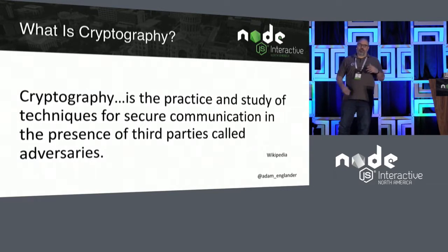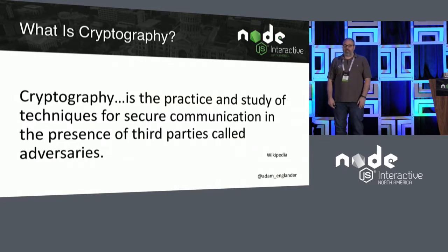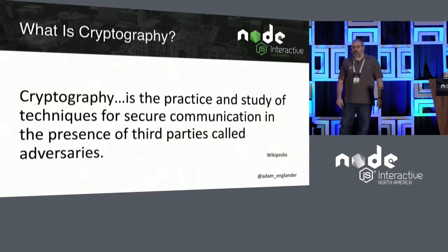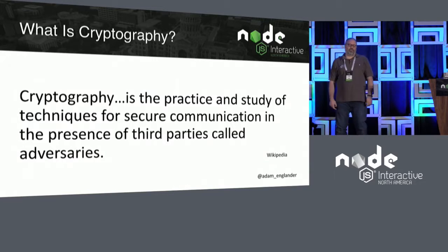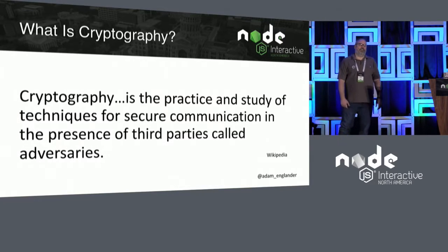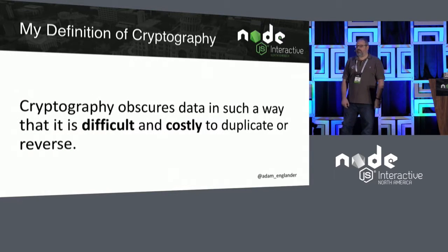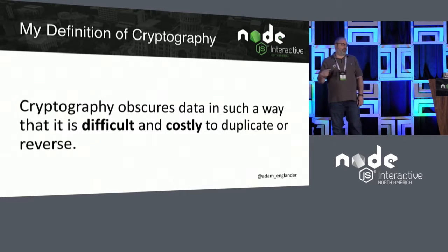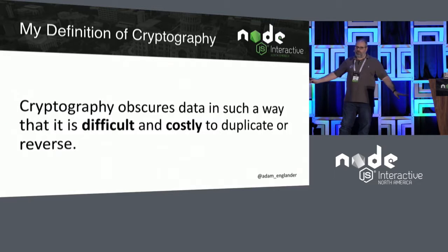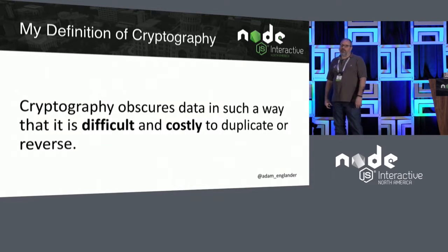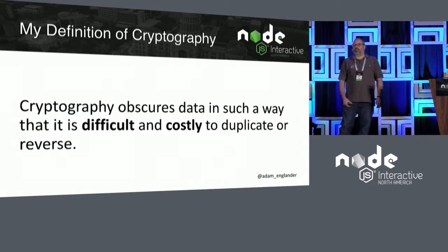So if you don't know, and if you're a complete noob, which is perfectly okay: cryptography is the practice and study of techniques for secure communication in the presence of third parties called adversaries. That's a great definition out of Wikipedia, but what does it really mean? Basically, cryptography is obscuring data in a way that's difficult and costly to duplicate or reverse. In application development, you're trying to make it very hard for people to decrypt your data and recreate passwords.